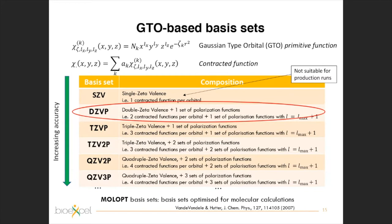This is called the single zeta basis set, because zeta is the name given to the exponent in the primitive Gaussian-type orbital function. This means I have only one primitive contracted function per occupied atomic orbital. Such a basis set gives a correct — meaning minimal — description for your molecular system, but it is not really sufficient to achieve good chemical accuracy.